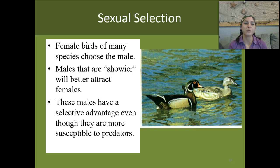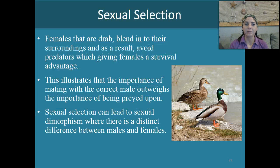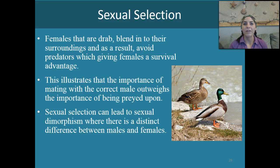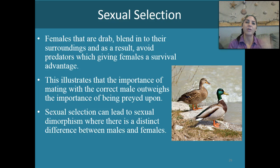Female birds of many species choose the male. Males are typically more showy than the females because they're trying to attract a mate. Males have a selective advantage — even though if they're more showy they're more susceptible to predators, the benefit of being able to mate with females outweighs the cost of being more visible to predators. Most of the time, females of the bird species are actually very drab — they blend into their surroundings. They do that because they're the ones typically caring for their young. They don't want bright green, orange, and red feathers attracting predators to their nests. They want earthy colors that match their environment so they can blend in and not get caught by predators. Whereas the males are going to be really flashy and showy because they're trying to attract the females.